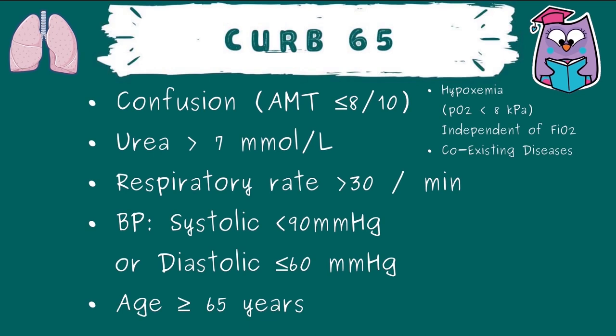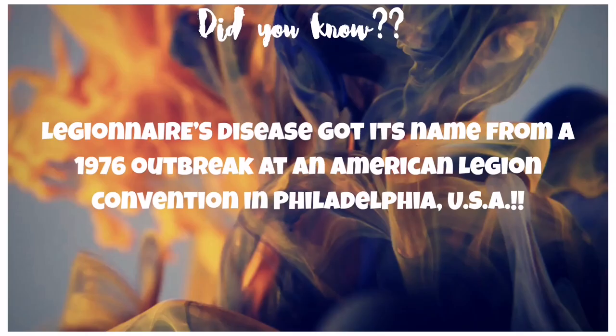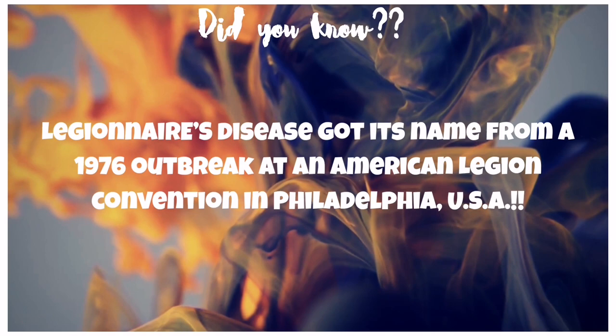There are two additional factors to count which don't give a score but point towards an adverse outcome. Here's the mortality prediction — higher the score, worse the outcome, going as high as 57%. The British Thoracic Society guidelines state that patients scoring up to two need to be prescribed oral antibiotics.